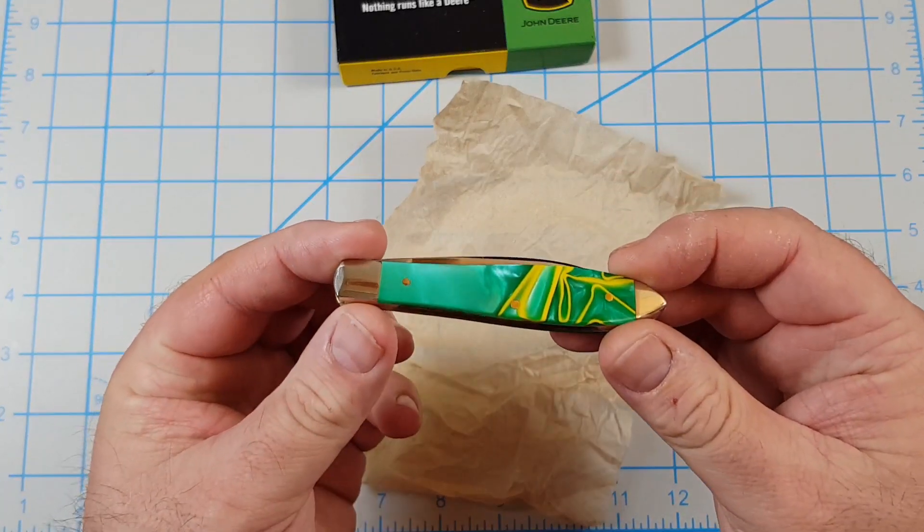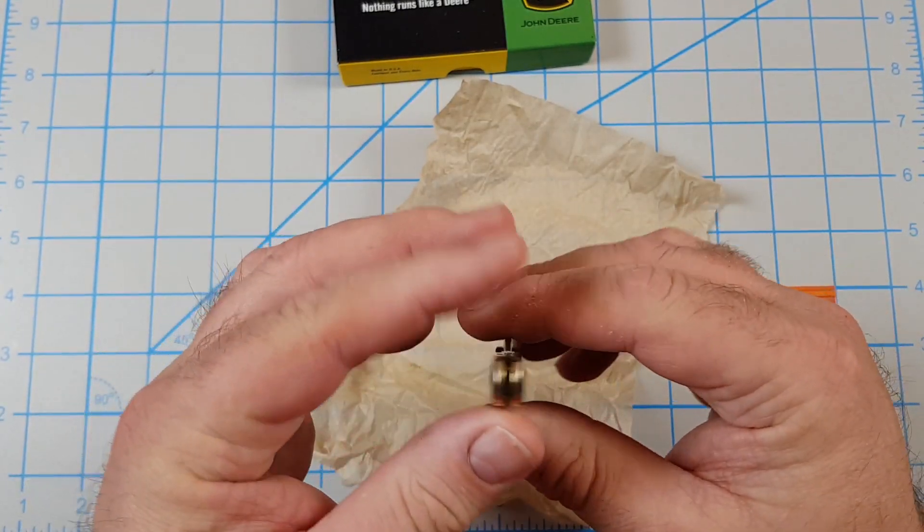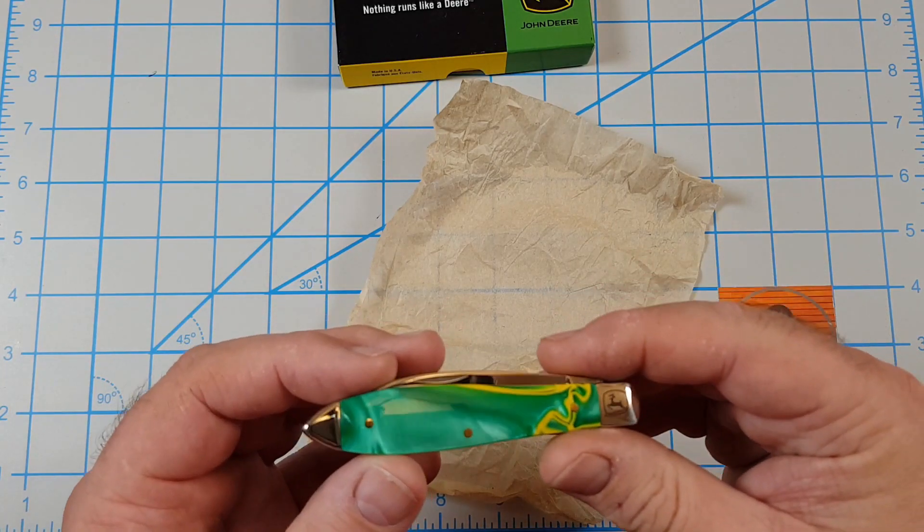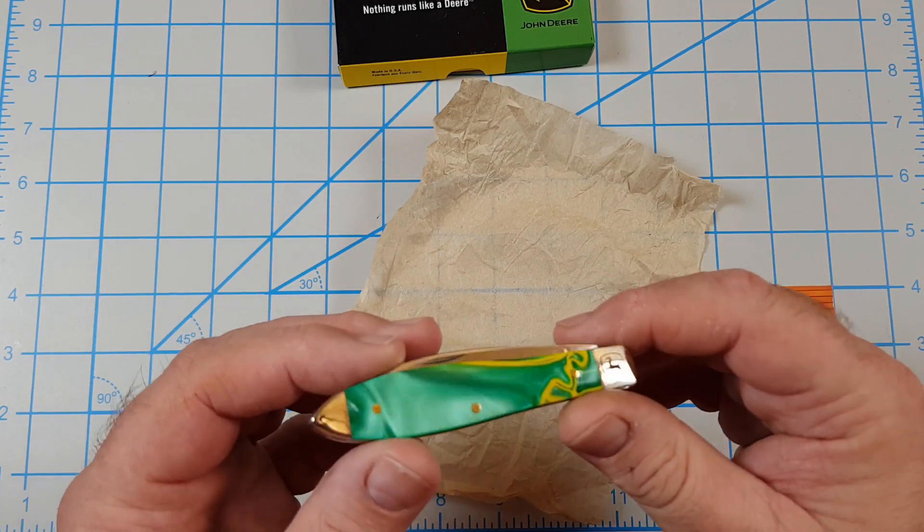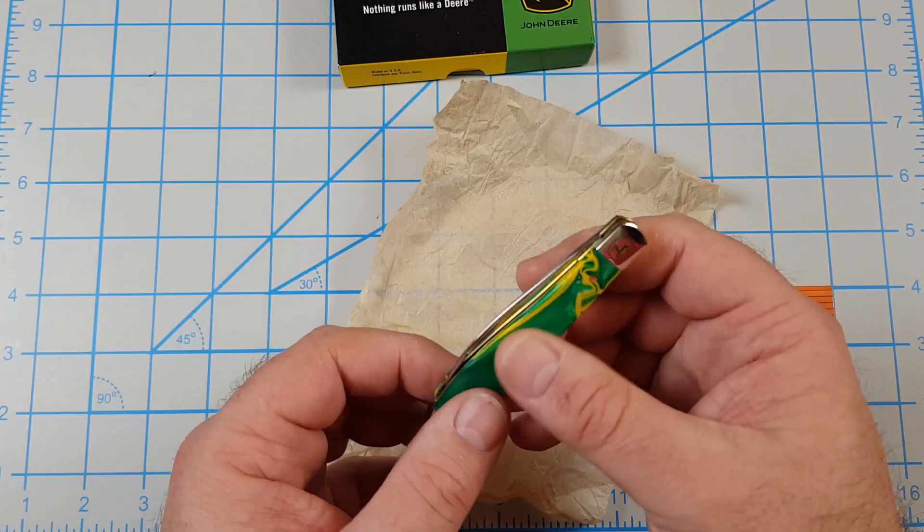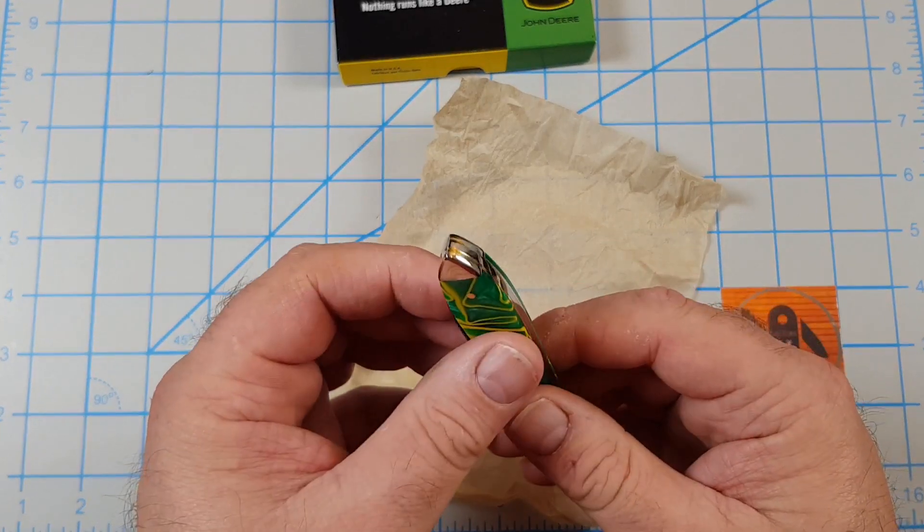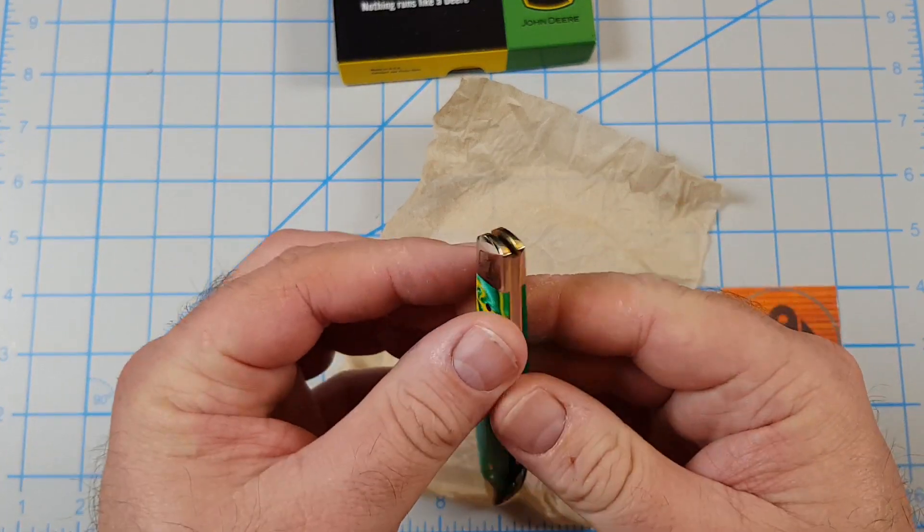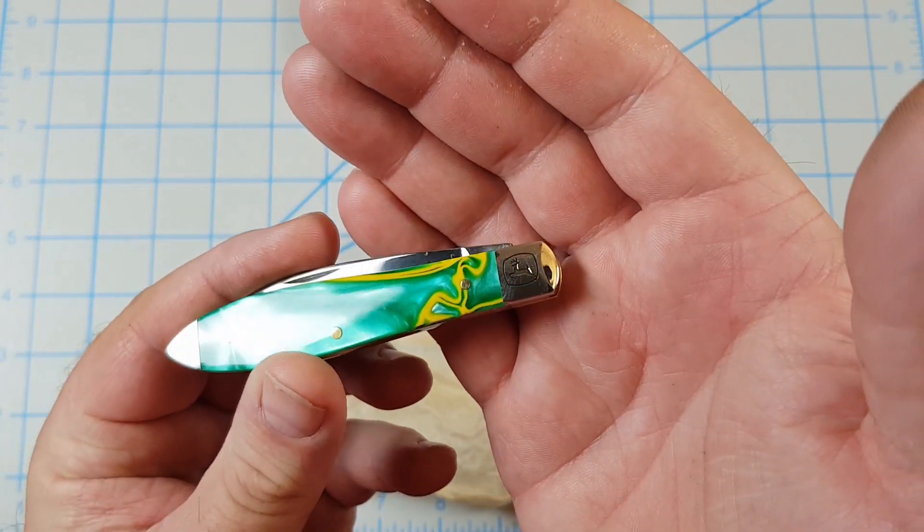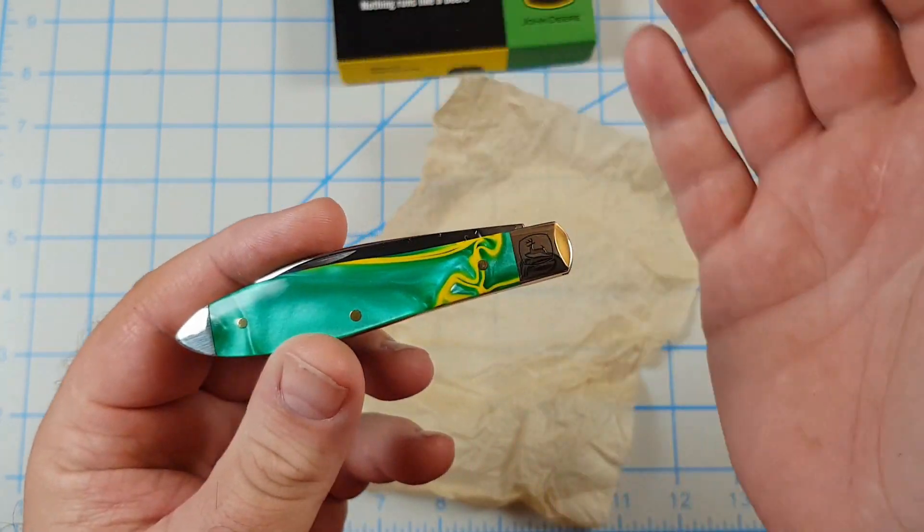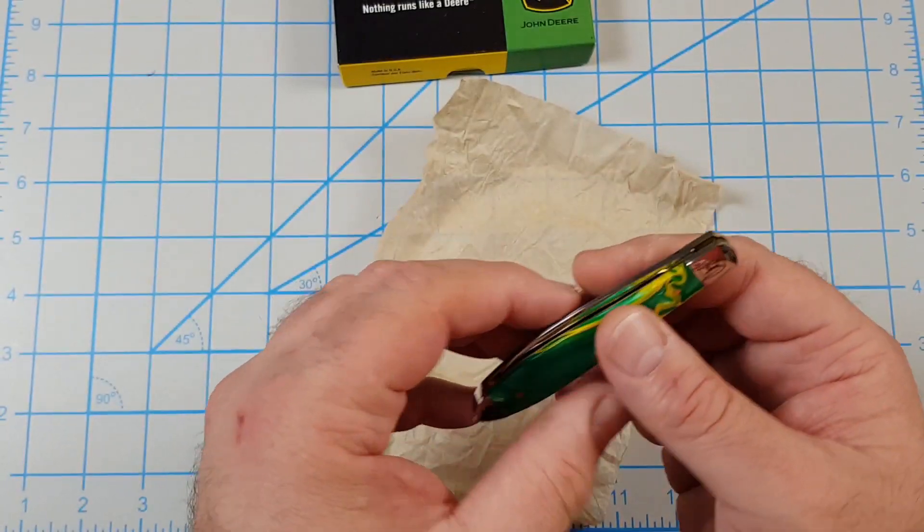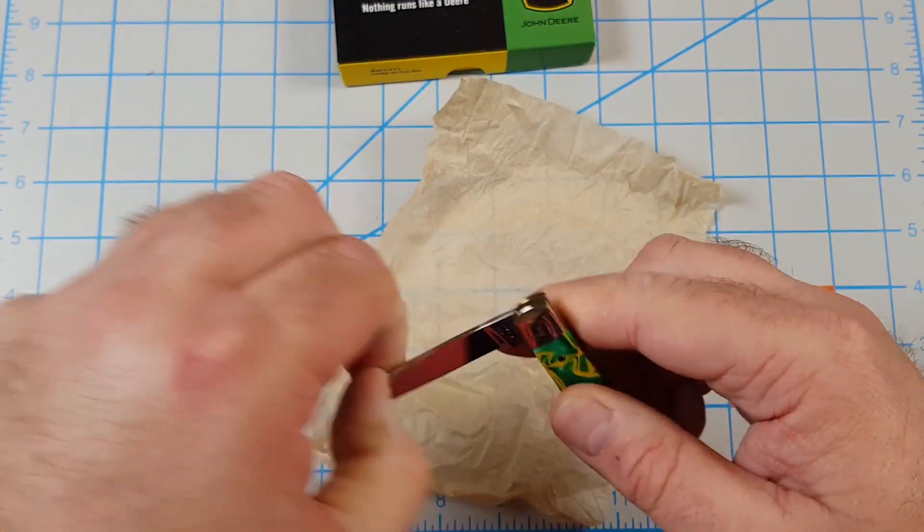This thing is cool looking. I know the camera's not doing it justice. When you look at this in the sunlight, it just sparkles and shines. It's almost three-dimensional looking, this Kirinite. Right there is the John Deere logo in the bolster. That's really it for John Deere branding.